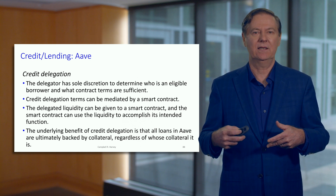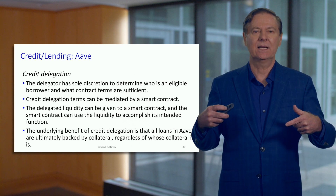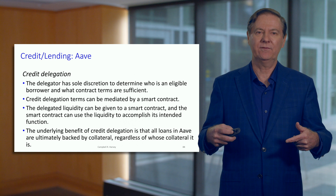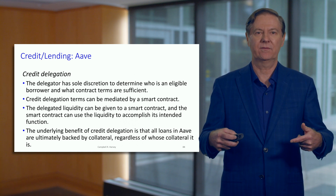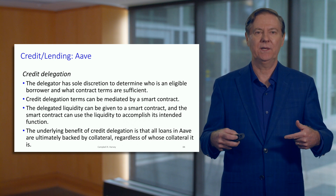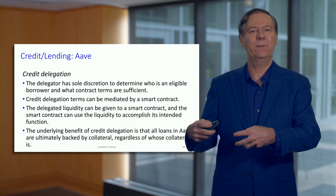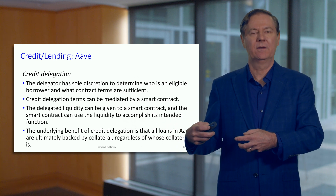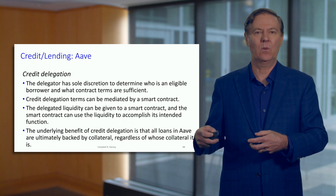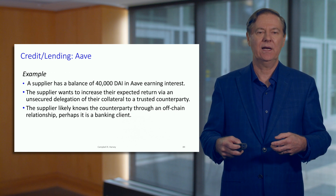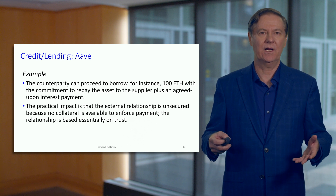There is some risk that there could be a default and the delegator is not paid. But it's important to realize that default doesn't impact the protocol itself, because the protocol is still going to be over-collateralized. Something is happening outside with some level of trust, and this enables those that want to delegate their credit to earn an extra rate of return — a very interesting idea.